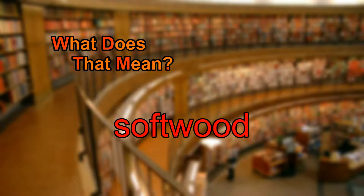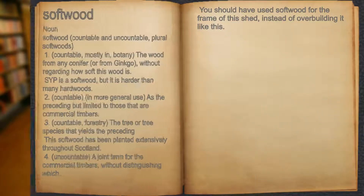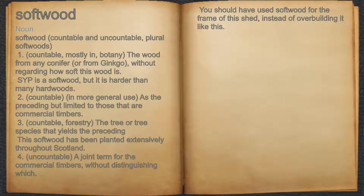What does softwood mean? Softwood. Noun. 1. Countable, mostly in botany: the wood from any conifer, or from ginkgo, without regarding how soft this wood is.